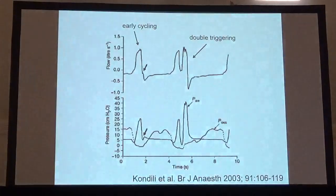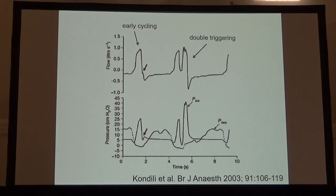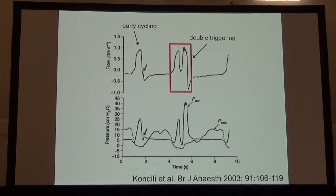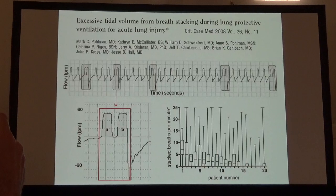For instance, early cycling is associated with eccentric contraction of the diaphragm, so this may be injurious for the muscle and may promote double-triggering as well, as Elias and Jeremy have already shown. This sort of breath stacking may, of course, be injurious.